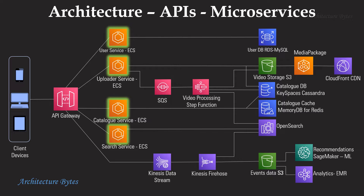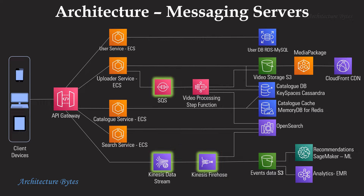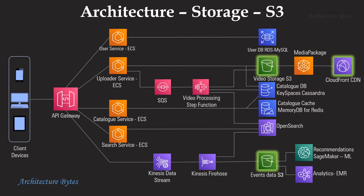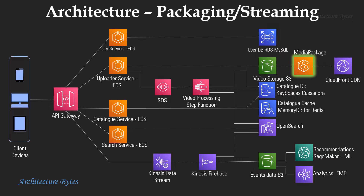You could model some of these as AWS Lambda functions as well. For messaging, we use Amazon SQS and Kinesis — we will see their exact use cases shortly. S3 is used for video storage while CloudFront is the content delivery network or CDN. Clickstream events data is also saved on S3.